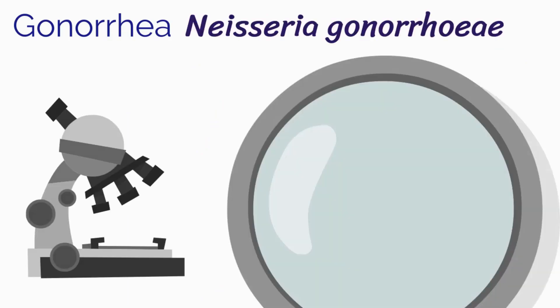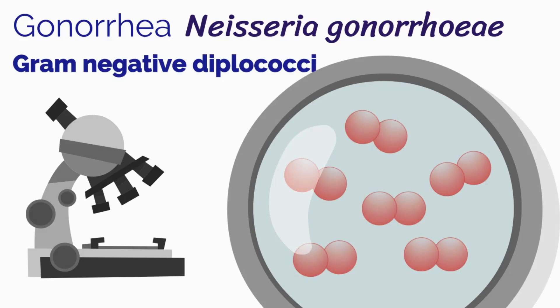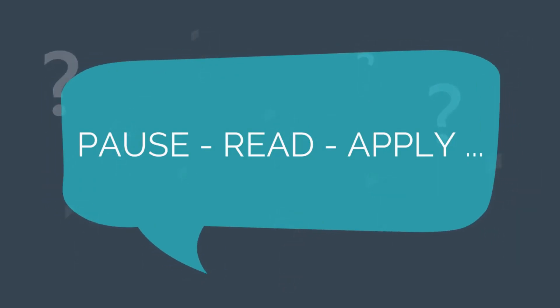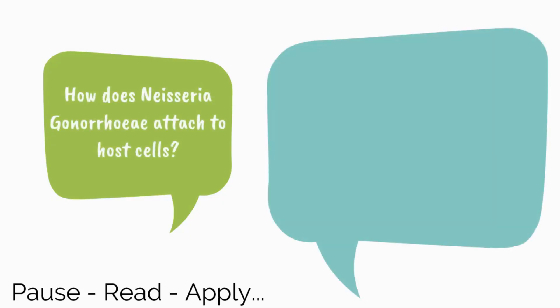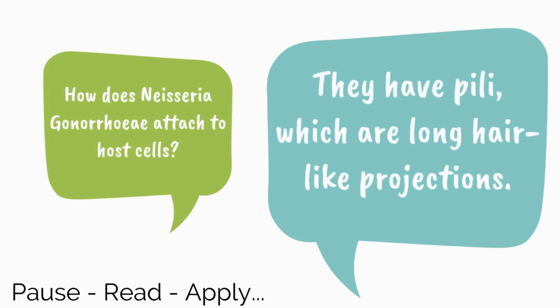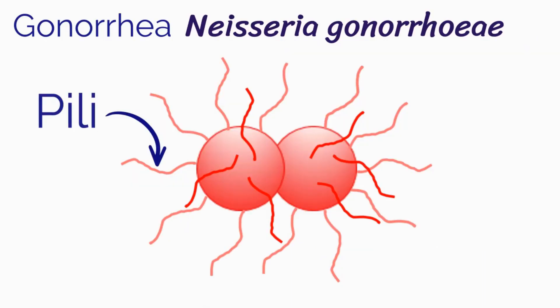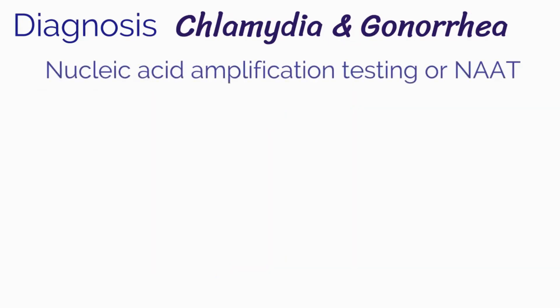Another common STI is gonorrhea, caused by Neisseria gonorrhea, a gram-negative diplococci. Like chlamydia, they are an obligate intracellular bacterium. Neisseria gonorrhea attaches to host cells via pili, which are long hair-like projections that allow the bacteria to adhere to mucosal membranes. After attaching, the bacteria invades the host cell and is able to multiply and divide intracellularly. Chlamydia and gonorrhea are typically diagnosed with Nucleic Acid Amplification Testing, or NAAT, given its superior sensitivity and specificity, and can be collected from a cervical swab or from urine. This method amplifies bacterial DNA or RNA sequences.